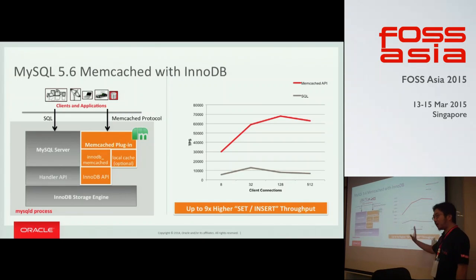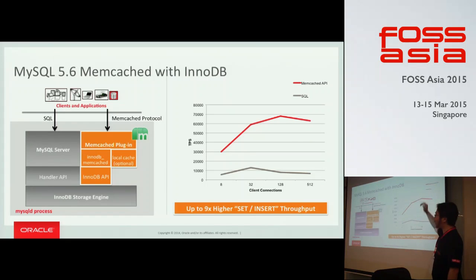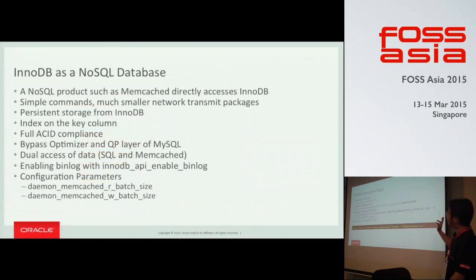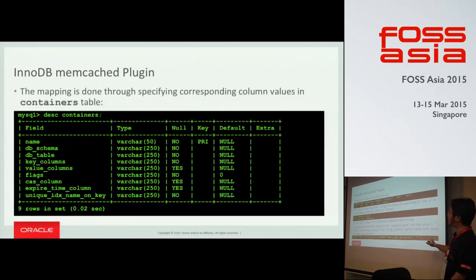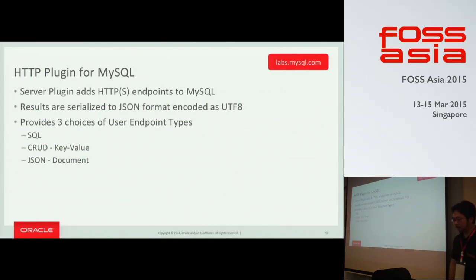This MySQL 5.6 memcached integration is not designed for scalability — it's more for absolute performance. INSERT versus memcached API data add is about nine times faster in simple data insert operations. I have a lot of examples but no time, so I'll upload this to the web as well.